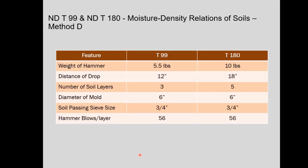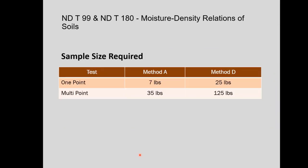Method D uses both the same hammers and same number of lifts, but the mold changes from four inch to six inch, and the soil is passing a three-quarter inch sieve with 56 blows per layer. Sample sizes required: for Method A, one point is about 7 pounds; Method D about 25 pounds. Multi-point is approximately 35 pounds for Method A and 125 pounds for Method D.